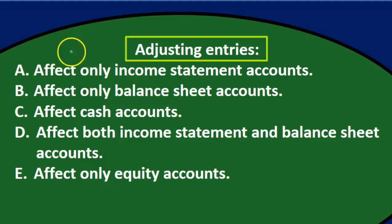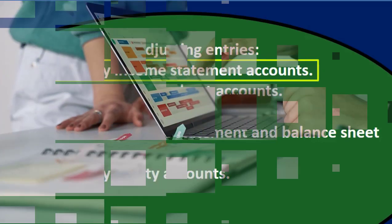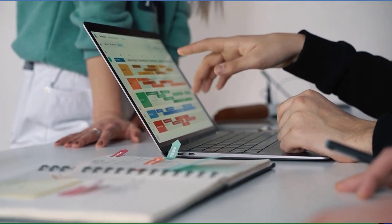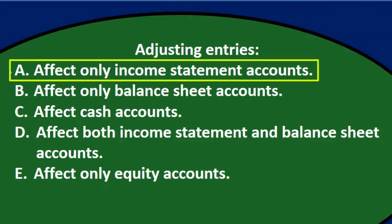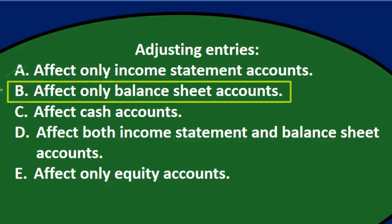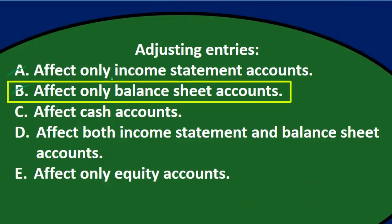Adjusting entries — A says affects only income statement accounts. I don't think that's the case. The adjusting entries happen at the end of the time period to make our financial statements correct on an accrual basis. Because we are dealing with timing differences, we typically will have one of each — a balance sheet account and an income statement account. So it's not just the income statement. B says affects only the balance sheet — that's not it either. The income statement is the timing statement, and as we decide when revenue and expenses occur, we also need to record the other side, which is a balance sheet account.